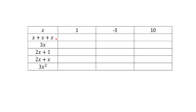If we consider our first expression, x plus x plus x, and we want to evaluate it when x is equal to 1, all we mean is if we put in the value of 1 everywhere there's an x, what is the value of that expression going to be? That's quite easy to work out. Everywhere you see an x, you put a 1, and so our answer is 3. If we evaluate it when x is minus 3, then everywhere in that expression where there was an x, you put a minus 3, and you get minus 3 plus minus 3 plus minus 3, which gives you minus 9.